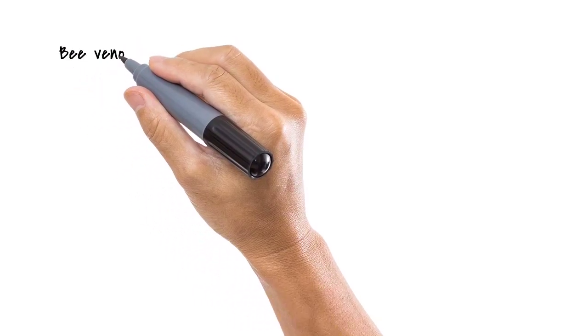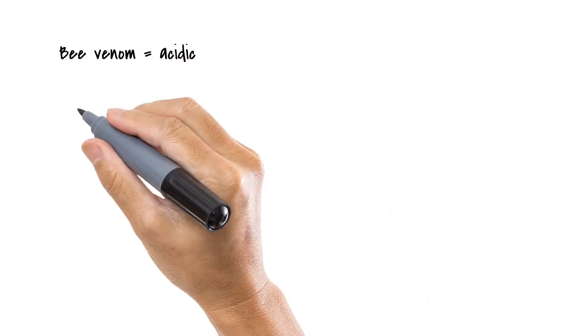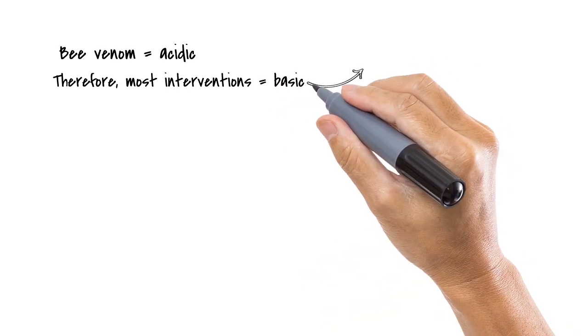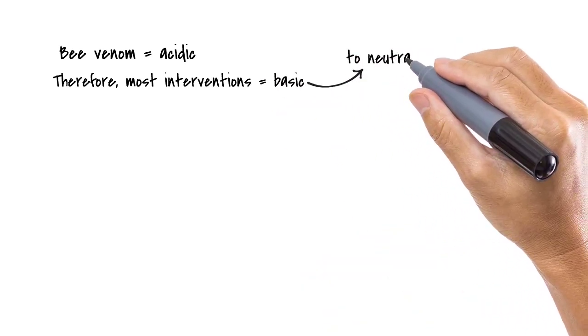It's important to note that bee venoms are acidic. Therefore, interventions for bee stings are supposed to be basic. This obviously is to neutralize the acidic bee venom.